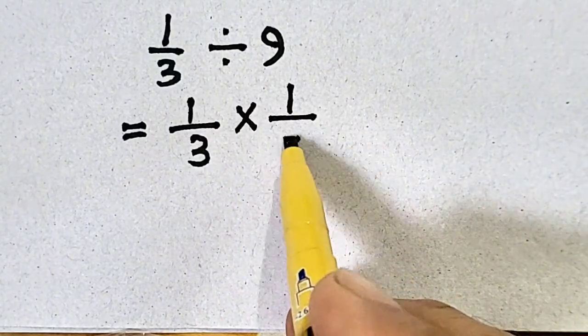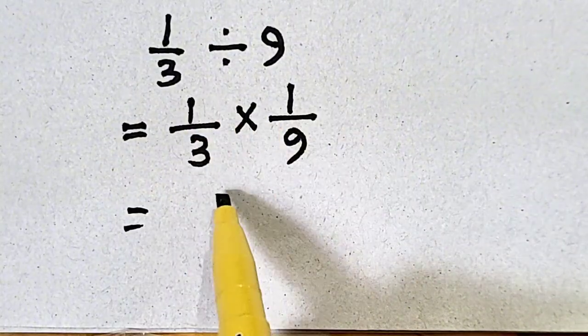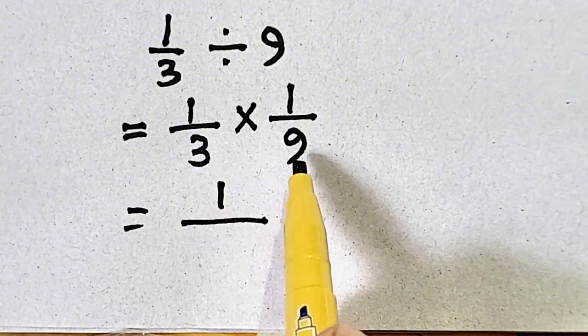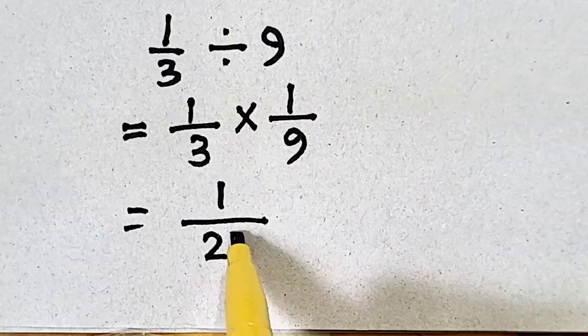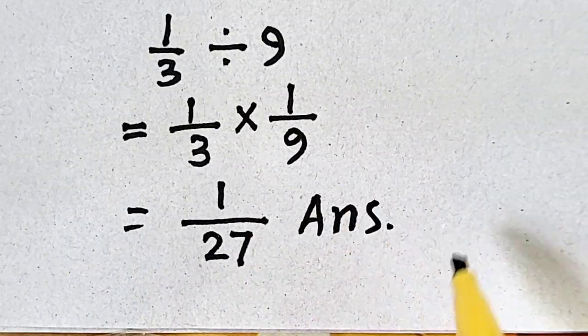9 is flipped, so it will become 1 over 9. And 1 times 1 is equal to 1. 3 times 9 is equal to 27, which will be our answer.